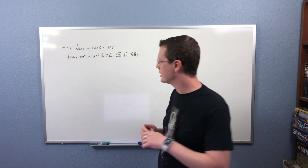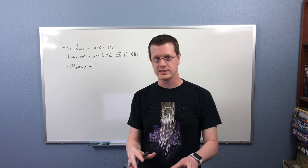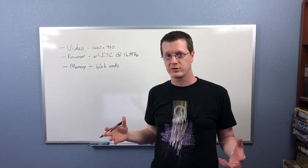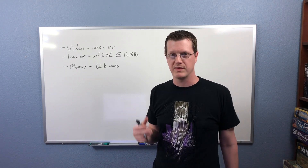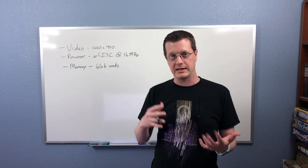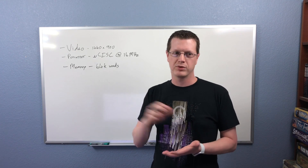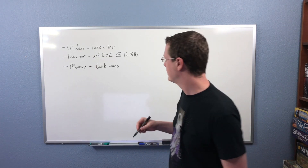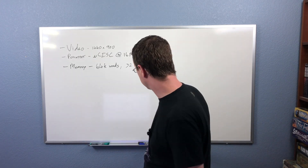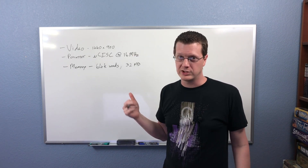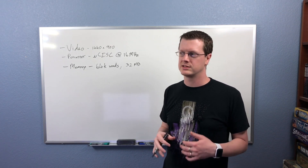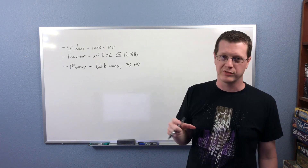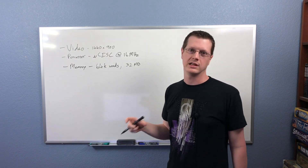Let's talk about memory. We're going to give the processor a full 64K of words, which is 128K of bytes. Since we have large screen real estate, we're going to need more than that. The processor has a banking system that lets it see different amounts of memory — you can give it up to 16 million words, or 32 megabytes. Those memory chips are really cheap, and it's actually hard not to give it more memory than it needs at this point.